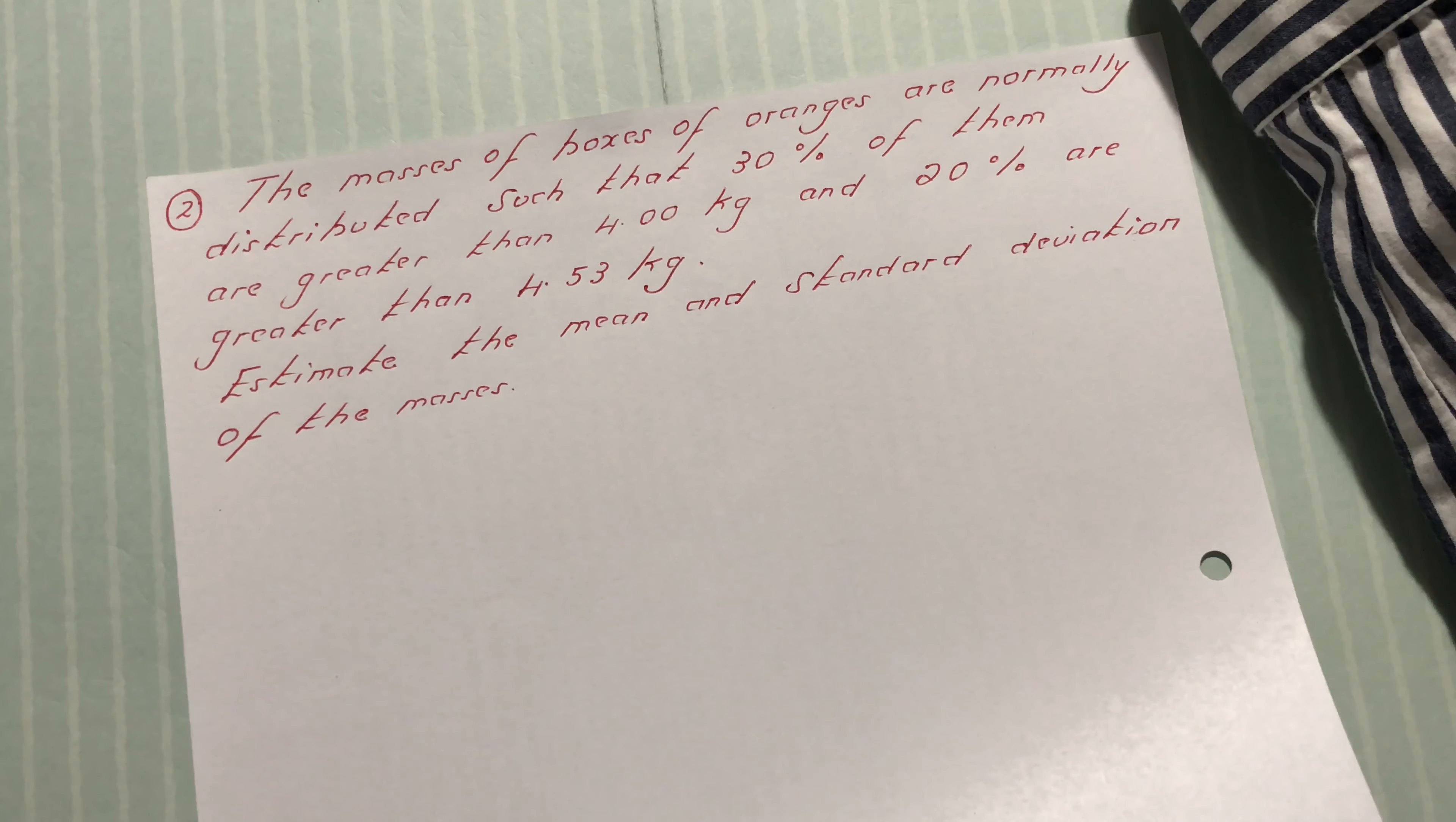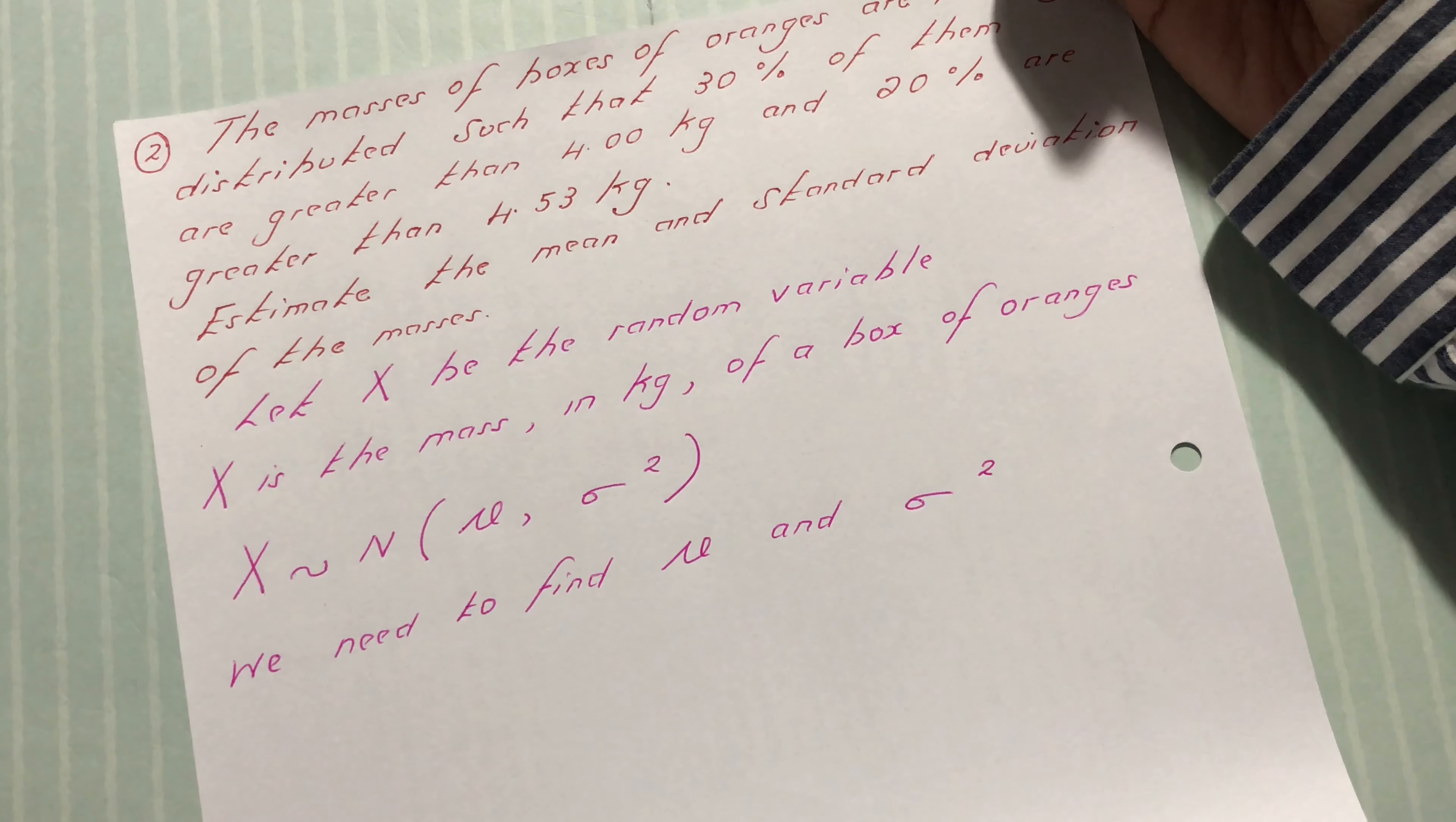We're going to start the question by letting x be the random variable. X is the mass in kg of a box of oranges. X follows normal mu sigma squared. In this question, we need to find mu and sigma squared.